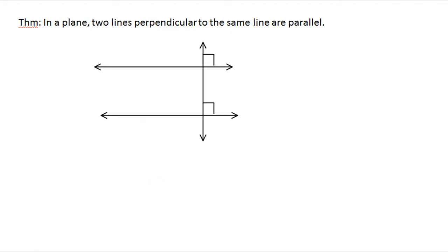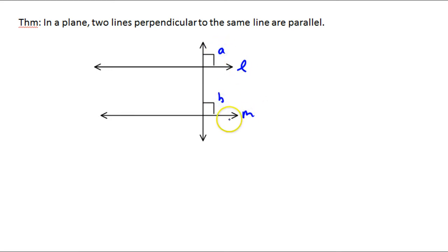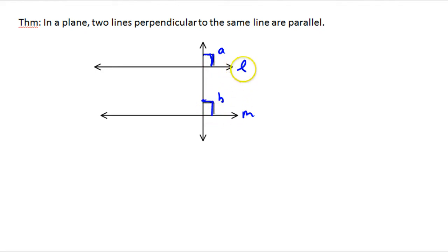In this theorem, we have two lines perpendicular to the same line, and that will let us say that the two lines are parallel. So if this is line L and this is line M, with angle A and angle B — angle A and angle B are corresponding angles, and if they're both perpendicular, then both of them measure 90 degrees, so we have congruent corresponding angles. Therefore, by the postulate, line L is parallel to line M.